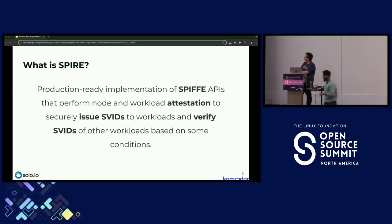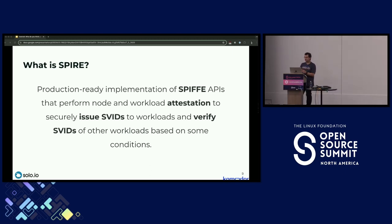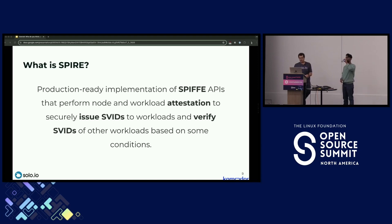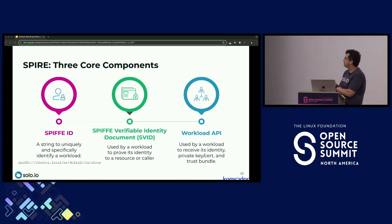Let's look at SPIRE — a production-ready implementation of SPIFFE APIs that performs node and workload attestation to securely issue SVIDs. An SVID — Secure Verifiable Identity Document — think X.509 or JWT. SPIRE securely issues SVIDs to workloads and then verifies SVIDs of other workloads based on certain conditions.